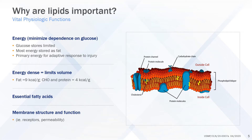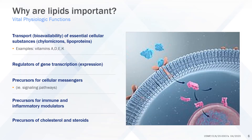Lipid provides essential fatty acids and is the primary structural component of cellular membranes. Lipids transport many essential cellular substances in the form of chylomicrons and lipoproteins. Examples include vitamins A, D, E, and K.